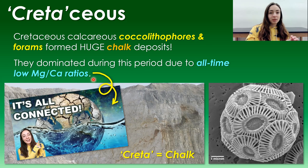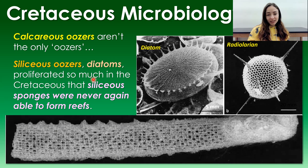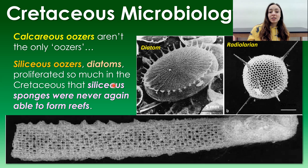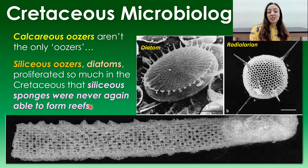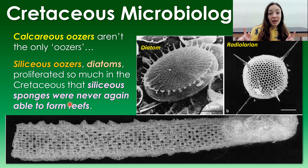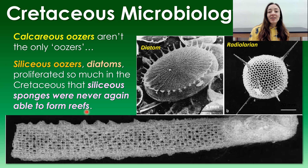I'll talk later about some organisms that prefer to precipitate aragonite that suffered during this time. Another major microbiological development was that siliceous-precipitating organisms such as diatoms proliferated to the point that all the silica in the ocean was essentially used up. Siliceous sponges used to form large silica reefs, but around 100 million years ago during the Cretaceous, diatoms consumed so much silica that those sponges were never again able to form reefs like they did before.